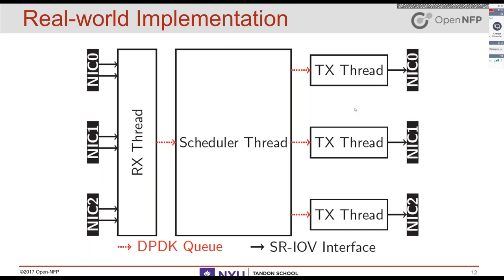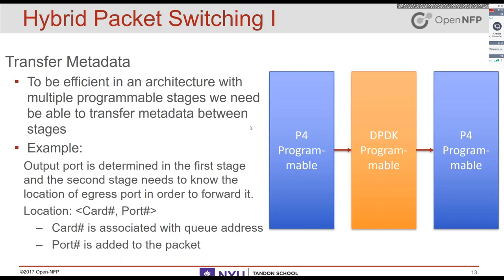The last stage of the pipeline serves those queues as specified by the previous thread. This programmable scheduler fills the gap that P4 leaves open - P4 has nice abstractions for data plane packet processing, but offers no abstractions for scheduling. The programmable scheduler can be implemented using DPDK to implement more advanced scheduling schemes. Right now it's a FIFO, but it could be a priority queue or any other scheme - it's up to the users.